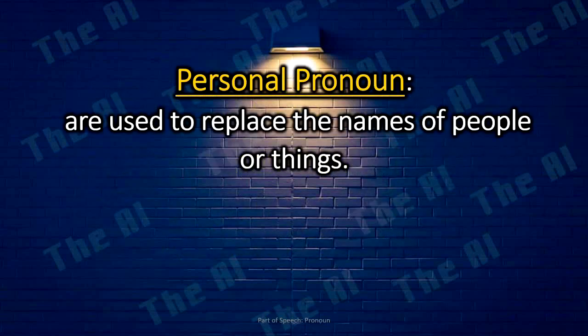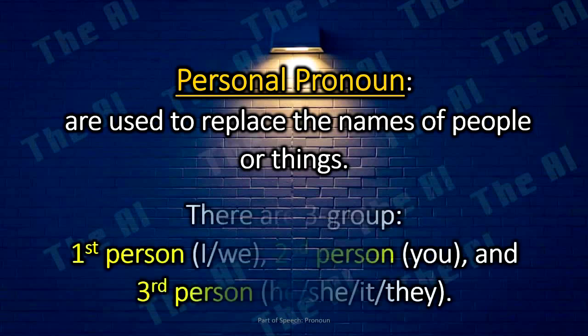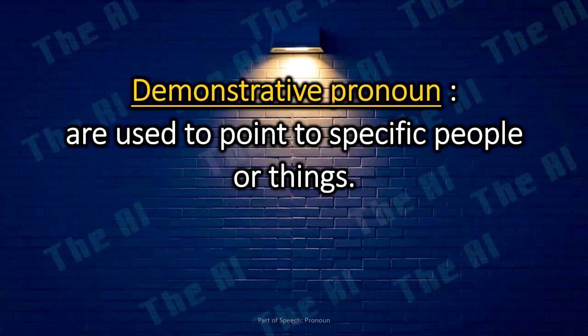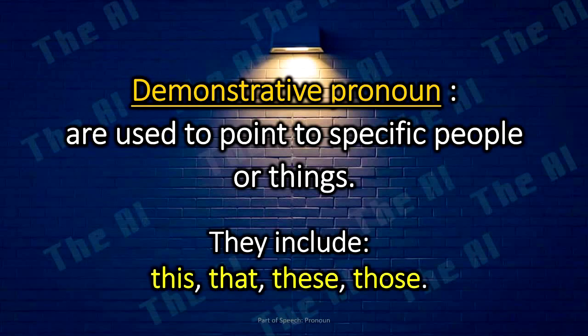Personal pronouns are used to replace the names of people or things. There are three groups: first person — I, we; second person — you; and third person — he, she, it, and they. Demonstrative pronouns are used to point to specific people or things, such as this, that, these, and those.